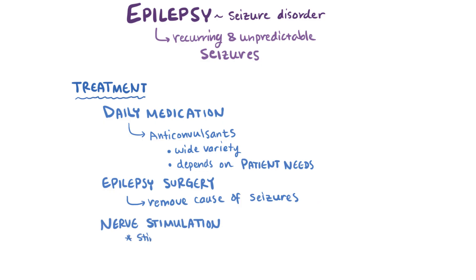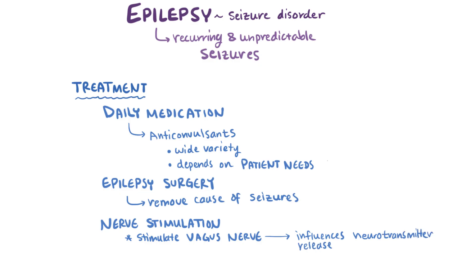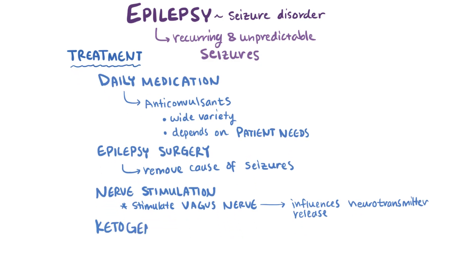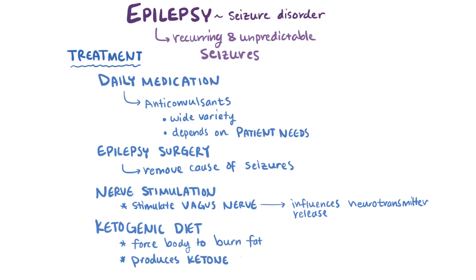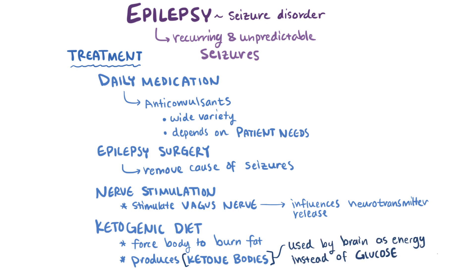Nerve stimulation might also be considered, where certain nerves like the vagus nerve are stimulated, which is thought to control seizures by influencing neurotransmitter release. Patients might also adopt a ketogenic diet, which forces the body to burn fat instead of carbohydrates, producing ketone bodies used by the brain as an energy source instead of glucose. Although many hypotheses have been suggested for why this seems to reduce seizures for some patients, the exact mechanism isn't very well understood.